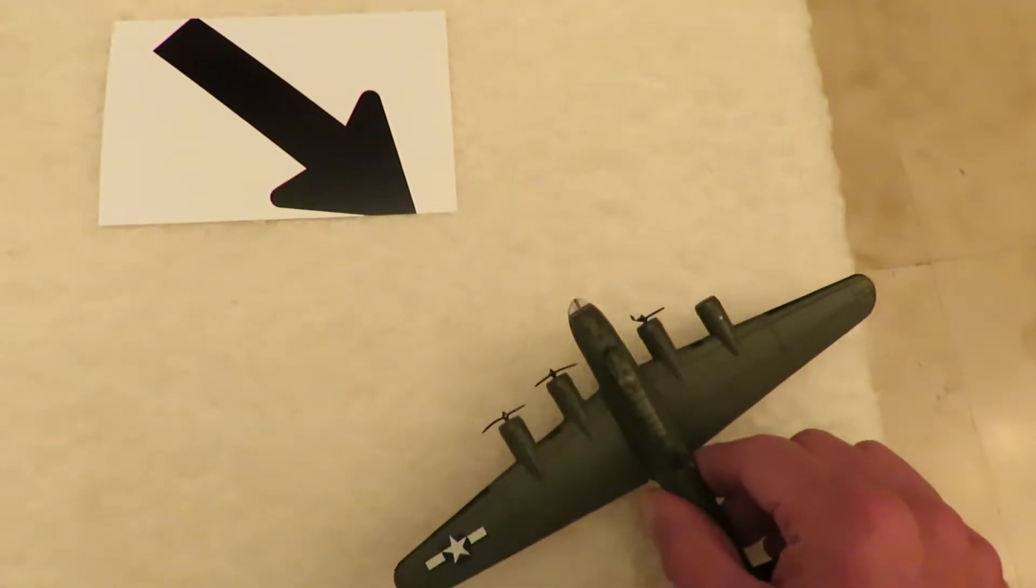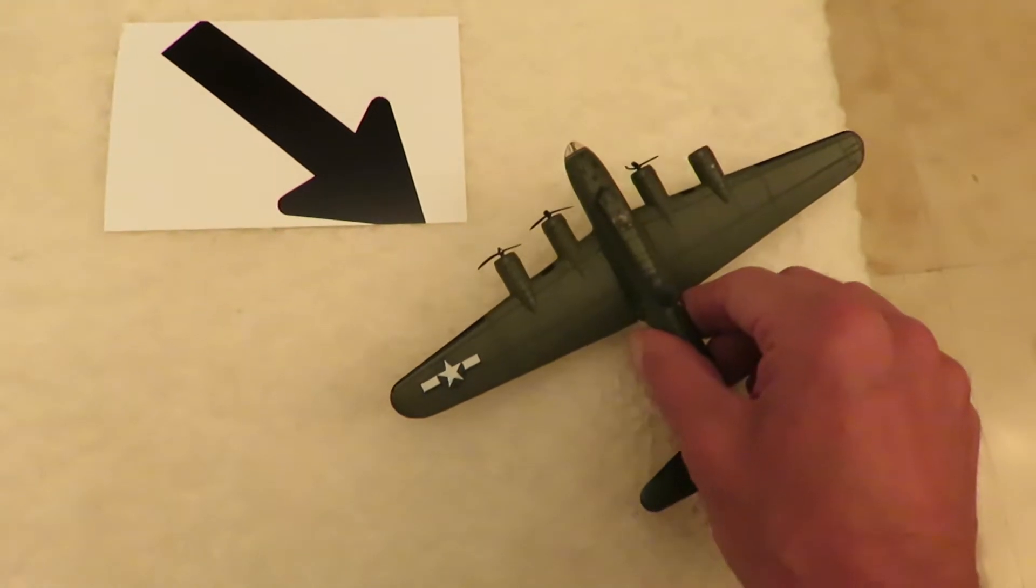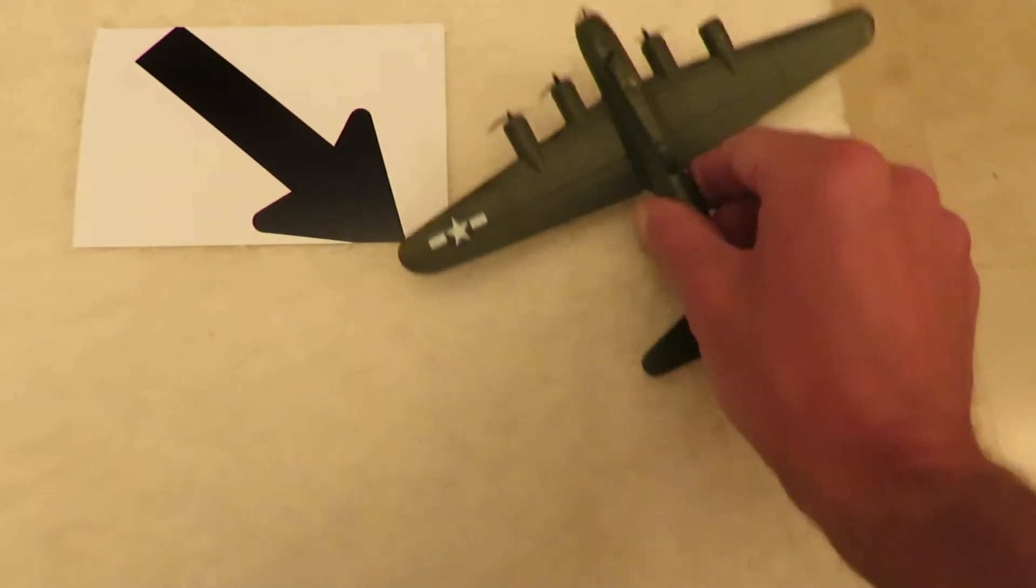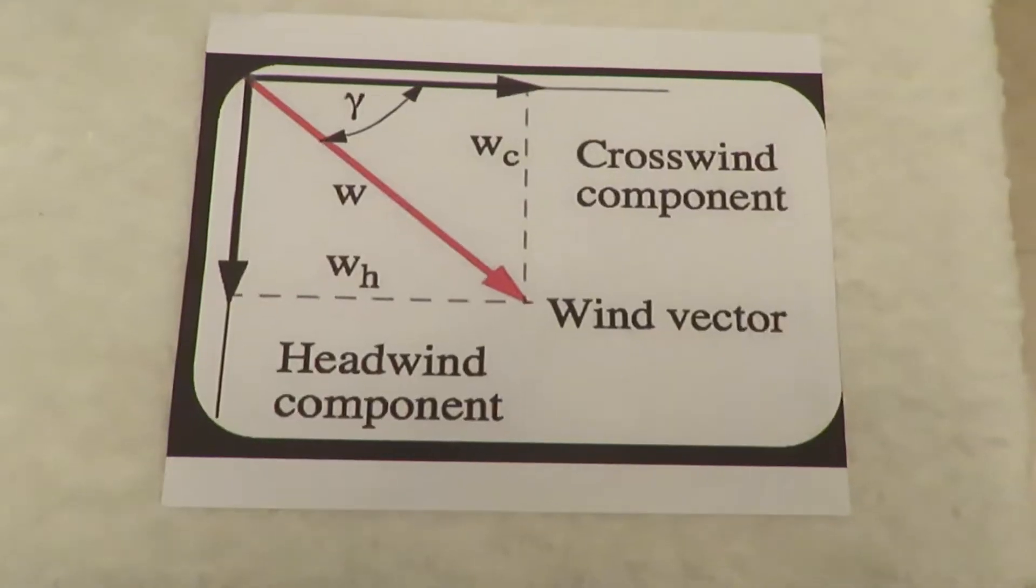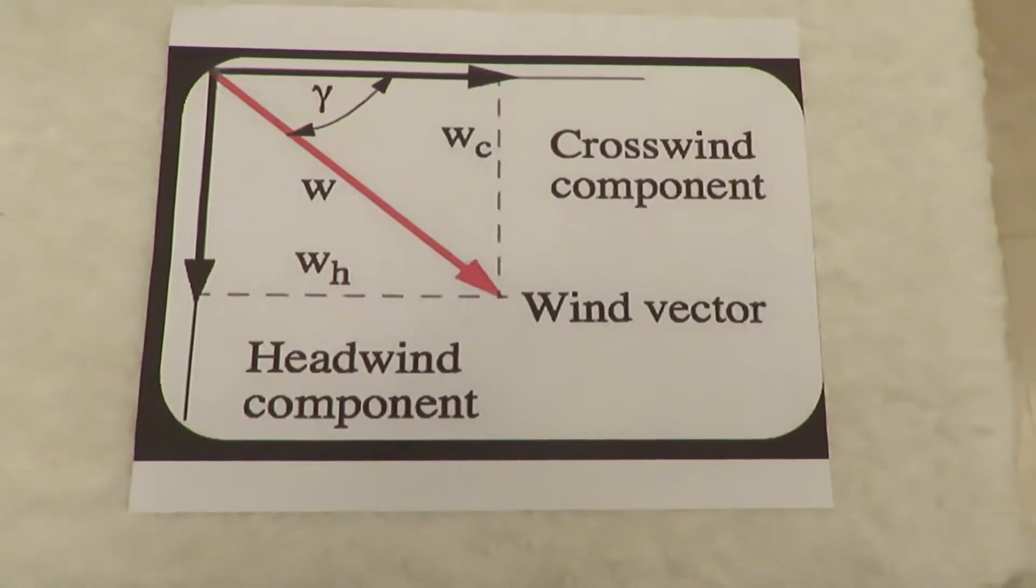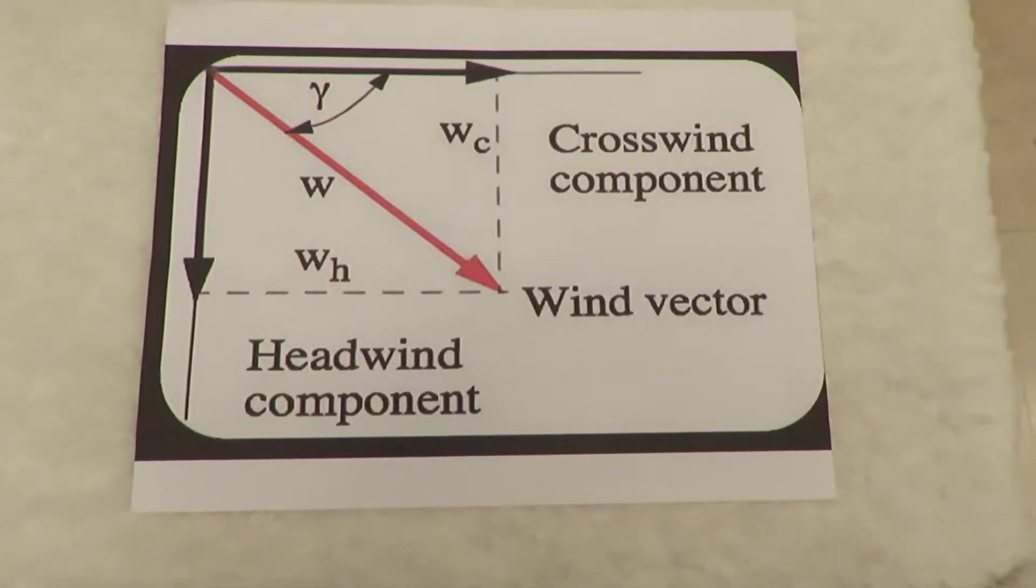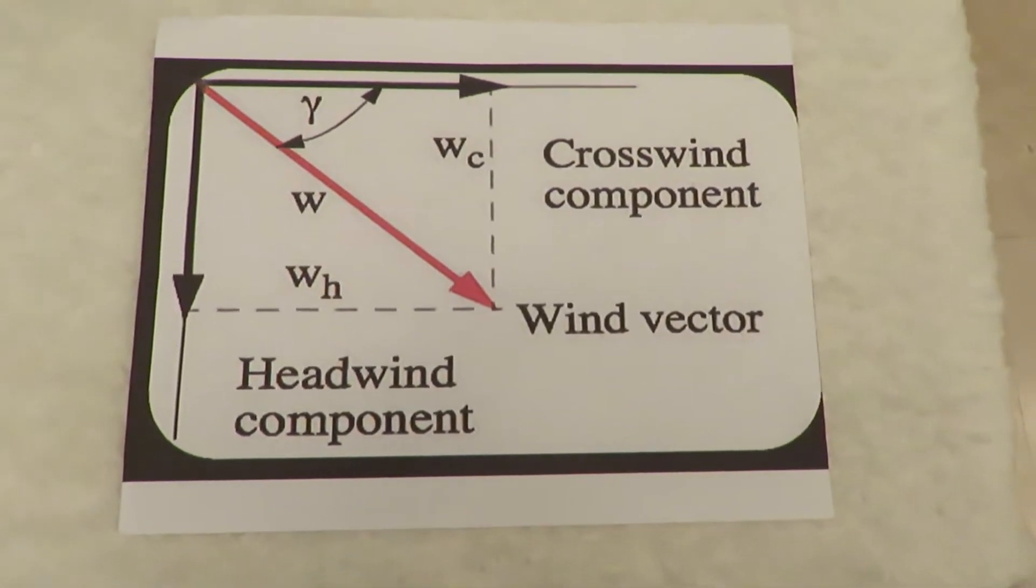For pilots, this is known as crabbing into the wind, but a more precise term is establishing the drift angle. An aircraft flying directly into the wind faces a headwind, and when flying directly away from the wind experiences a tailwind.